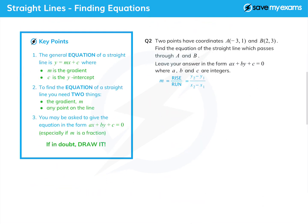Now sometimes we have to work a little harder. Let's look at question 2. This time we're given two points, A(-3, 1) and B(2, 3), and we're asked to find the equation of the straight line which passes through A and B. We're not given the gradient yet, so we're going to have to find that.